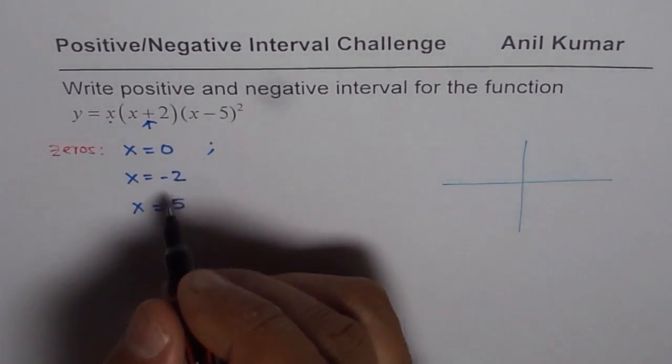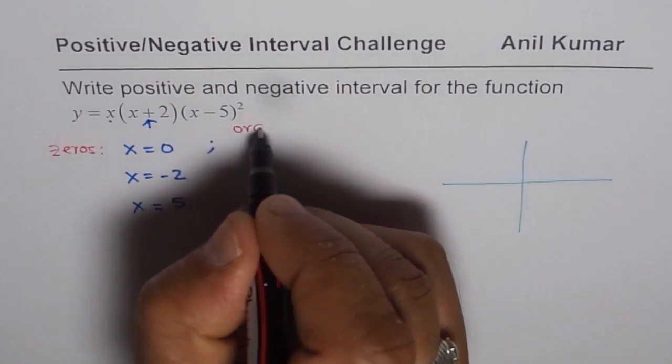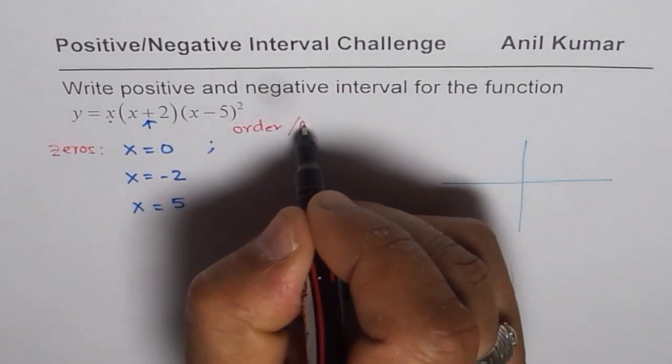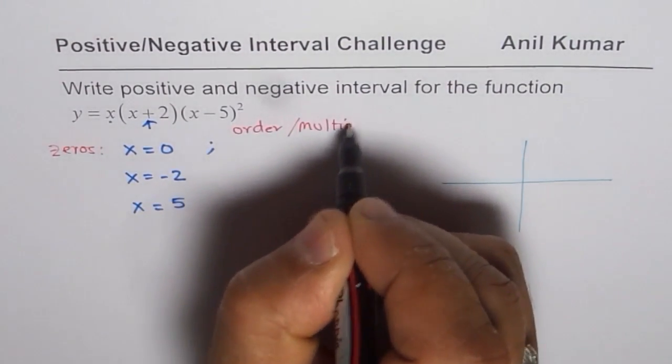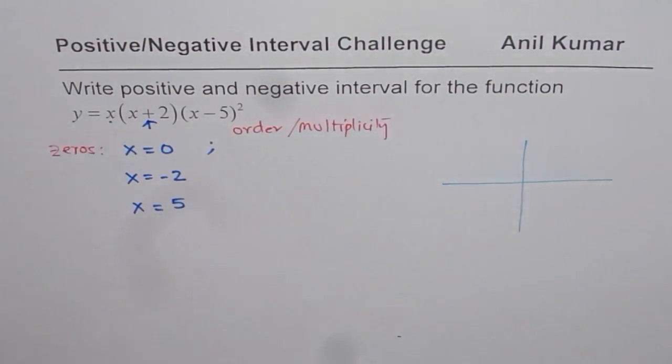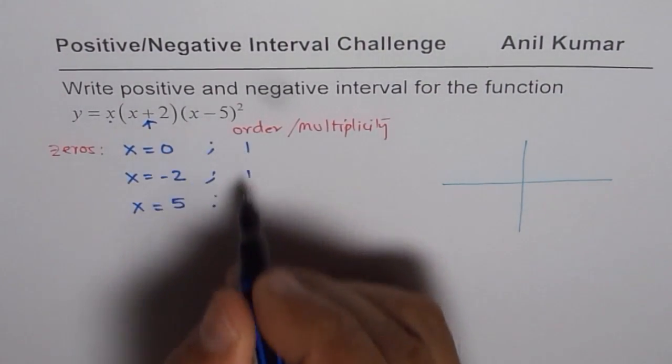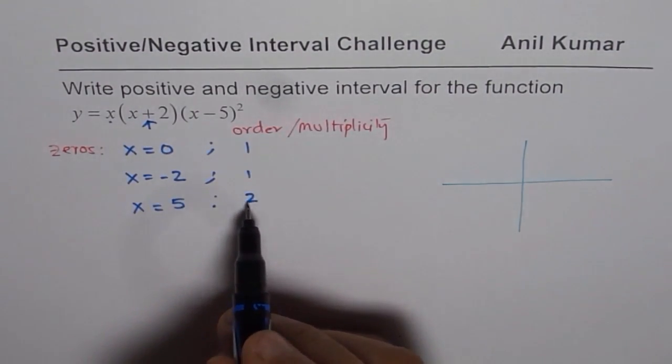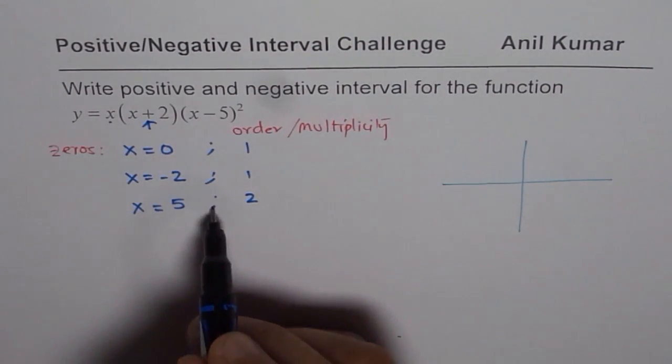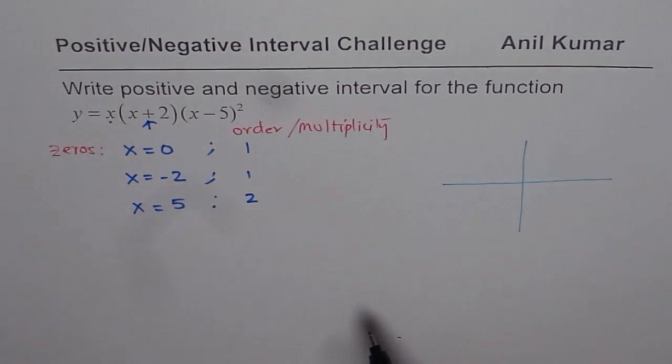And important thing is, we should write their order or multiplicity. So order for these zeros: first one is 1, the other one is also 1, the third one is 2. 2 means it will be like a parabola, just reflecting from the x-axis.